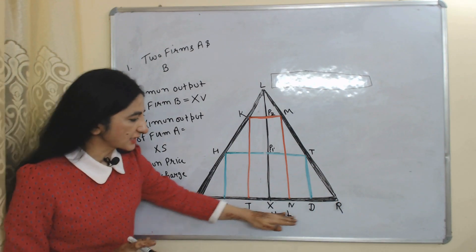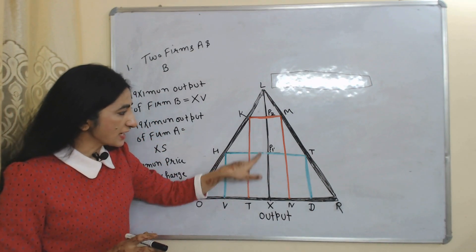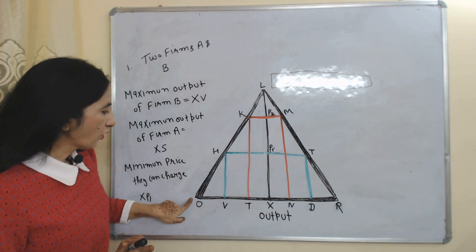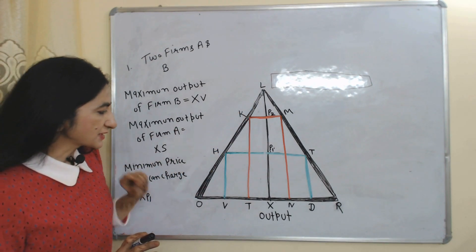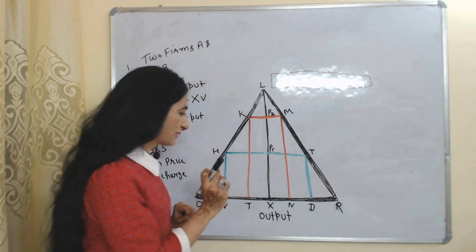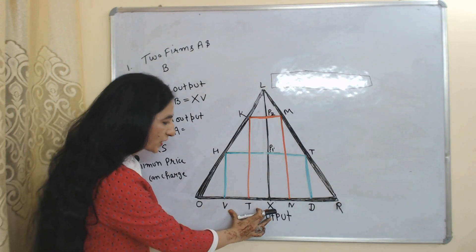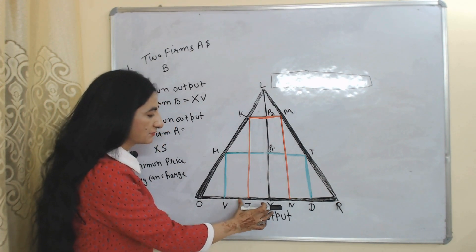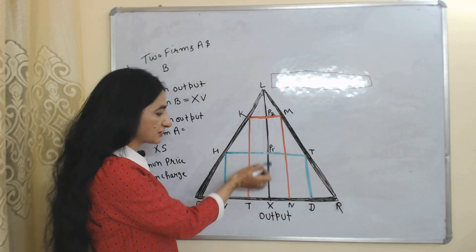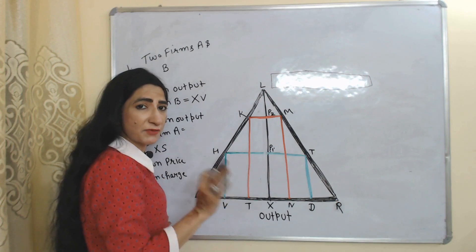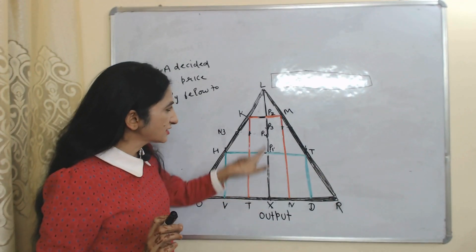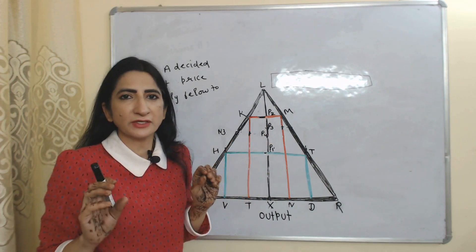Now we understand this model with the help of a diagram. We assume we have only two firms, A and B. On the x-axis we have output, and on the y-axis we have price. This curve is the demand curve of firm A, and this one is the demand curve of firm B. Maximum output firm A can produce is xd, and maximum output firm B can produce is xv. Minimum price both firms can charge is xp1 — they cannot reduce price below xp1 or they can't survive in the market. Maximum price they can charge is xp2, which will be called the maximum profit price.